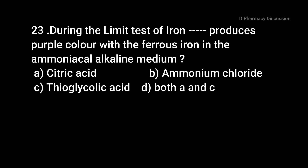Question 23: During the limit test of iron, dash produces a purple color with ferrous iron in ammoniacal alkaline medium. Options: A: citric acid, B: ammonium chloride, C: thioglycolic acid, option D: both A and C. Correct answer is option C, thioglycolic acid.